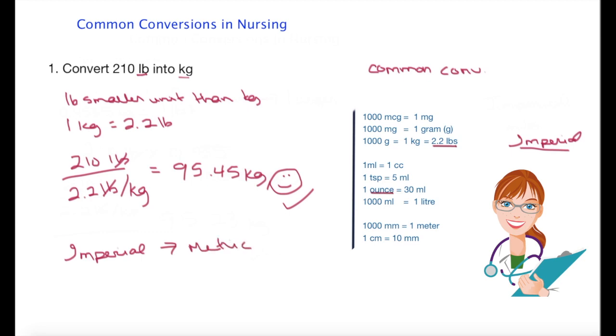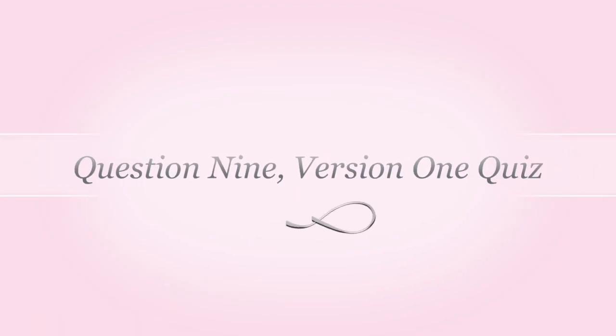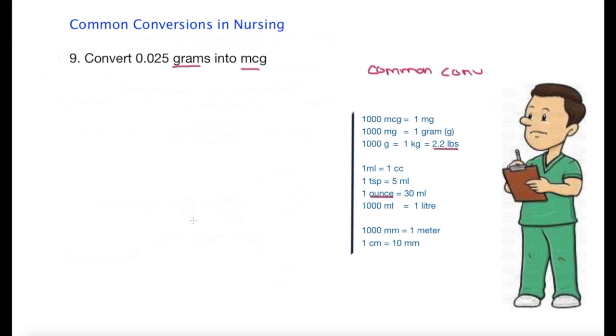Okay, so question nine is asking us to convert 0.025 grams into micrograms. I want to look at this question because there's actually two steps to this conversion. So I am moving from a bigger unit of grams to a smaller unit of micrograms, which means I'm going to be multiplying.